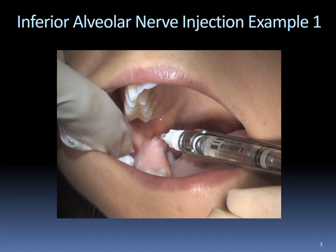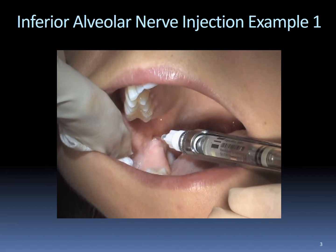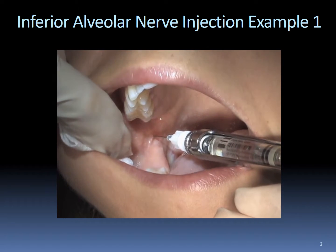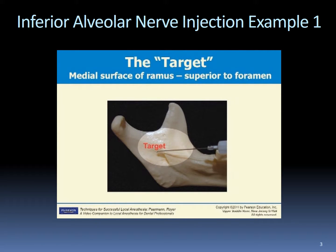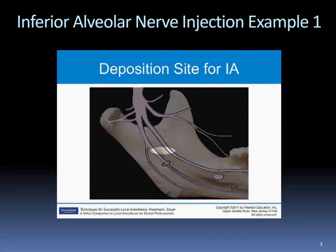In the opposite case — the needle does not contact periosteum at the anticipated depth — the clinician should withdraw the needle slightly and redirect the barrel of the syringe more posteriorly toward the molars, then re-advance until periosteum is gently contacted. A patient may experience a momentary shocking sensation when the needle nears the lingual nerve. Should that occur, explain to the patient what has happened, tell them they are right on target, it is only a temporary sensation, and they will begin getting numb immediately. Inform the patient this is normal so they don't think the clinician has poor technique.